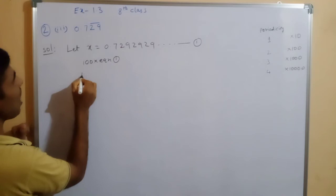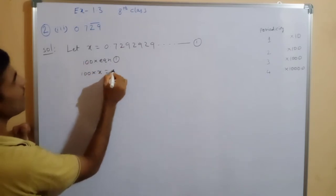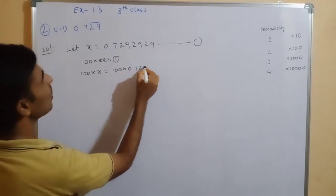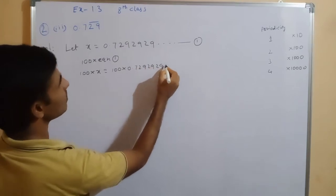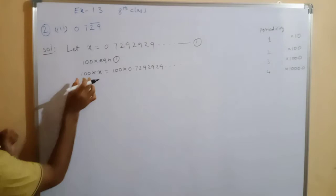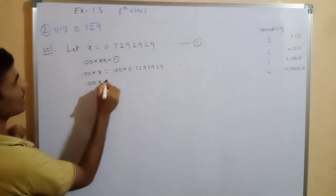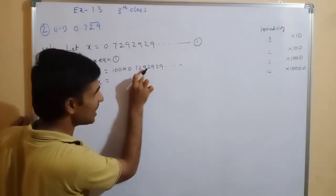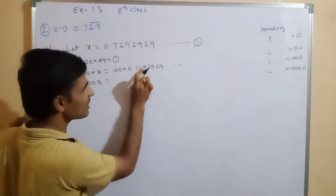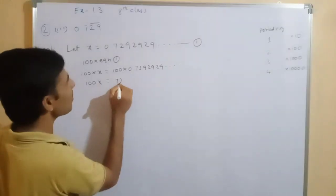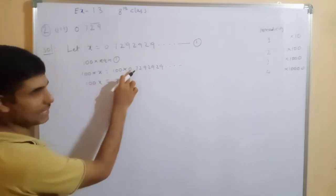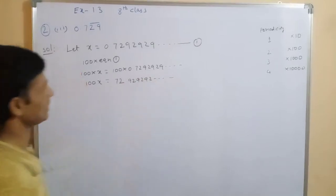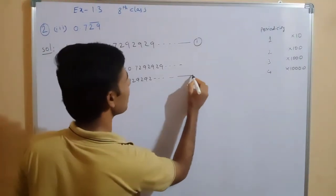Now, 100 into x equals 100 into 0.7292929... and so on. When you multiply by 100, the decimal point jumps two places to the right, so we can write 72.929292... and so on. Take this as Equation number 2.